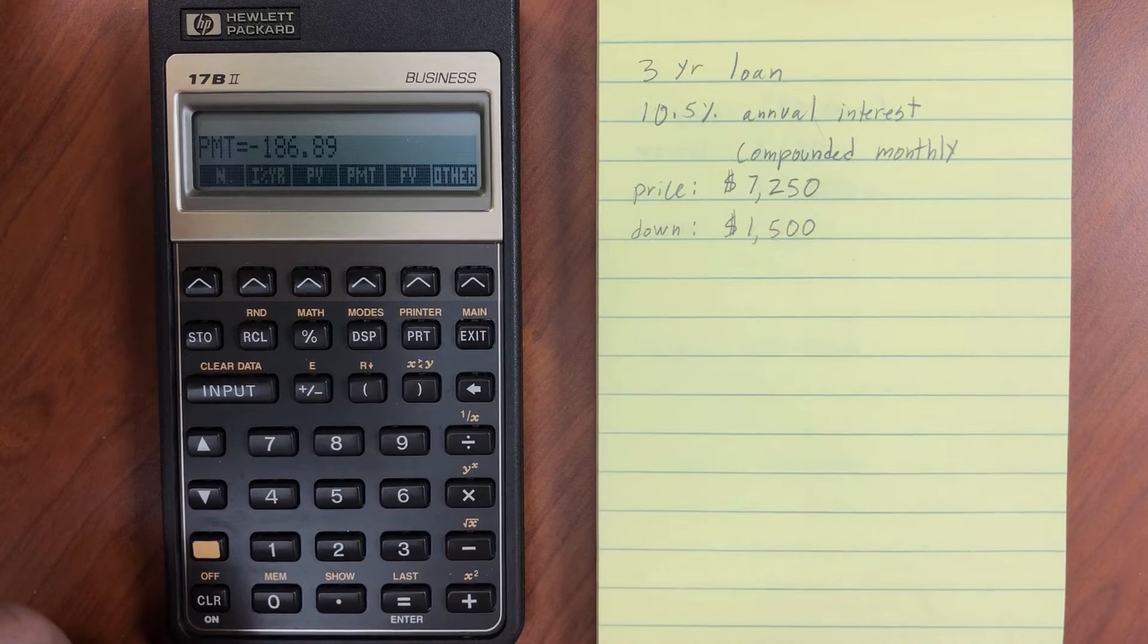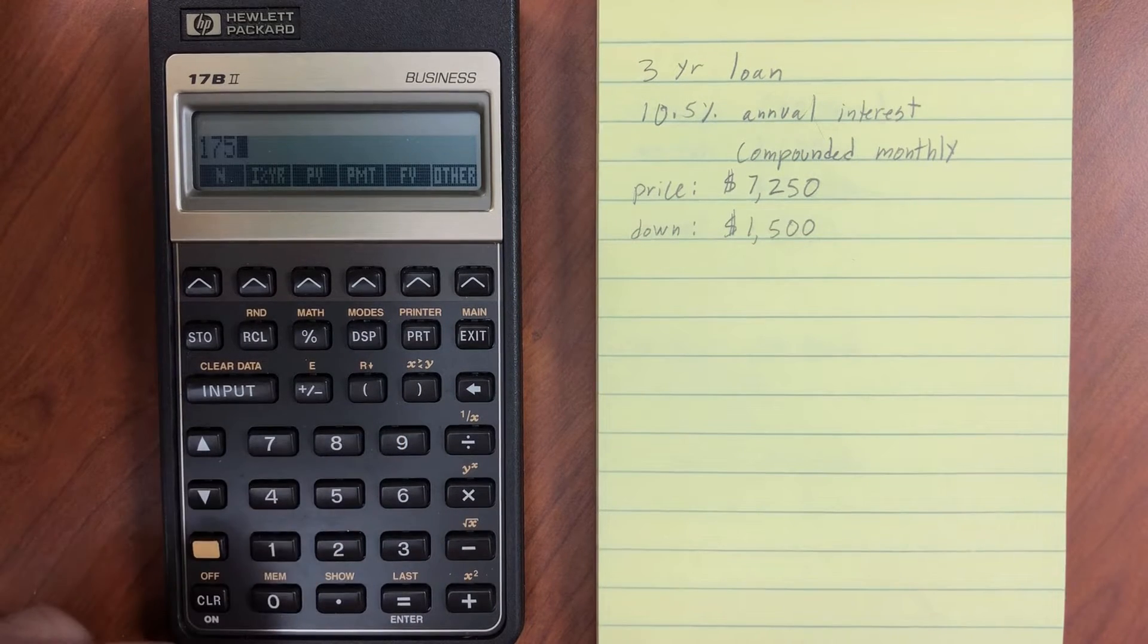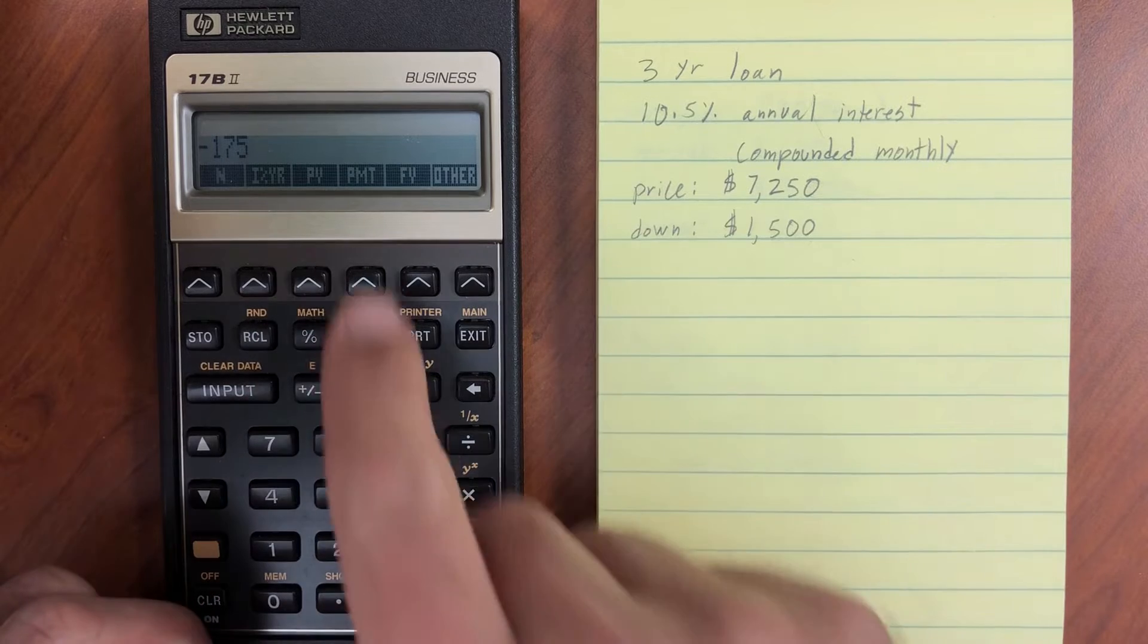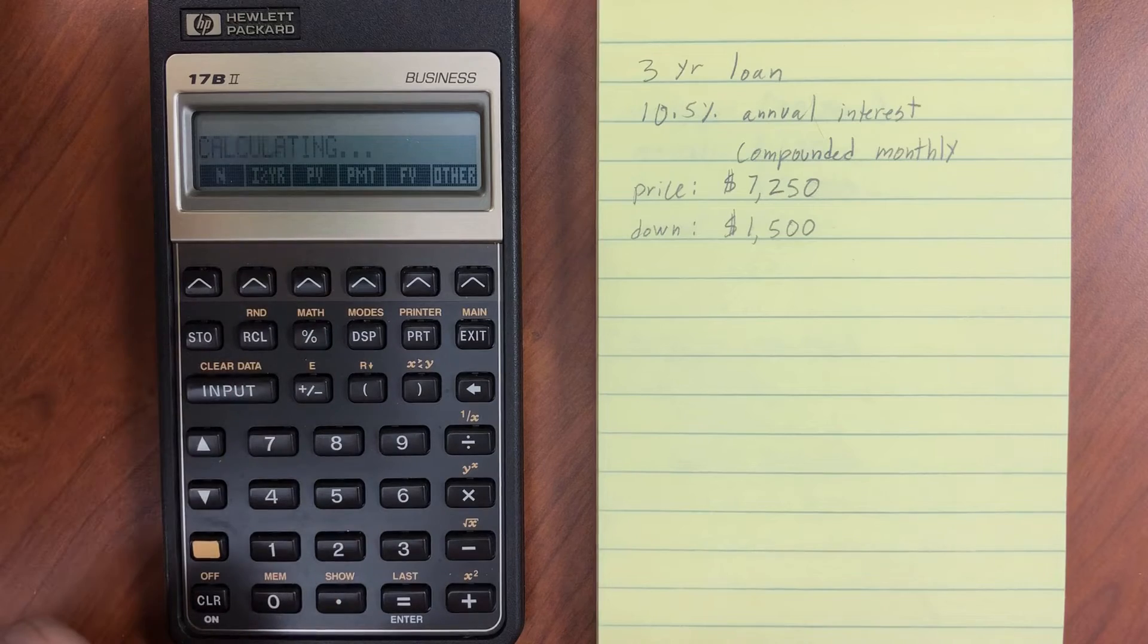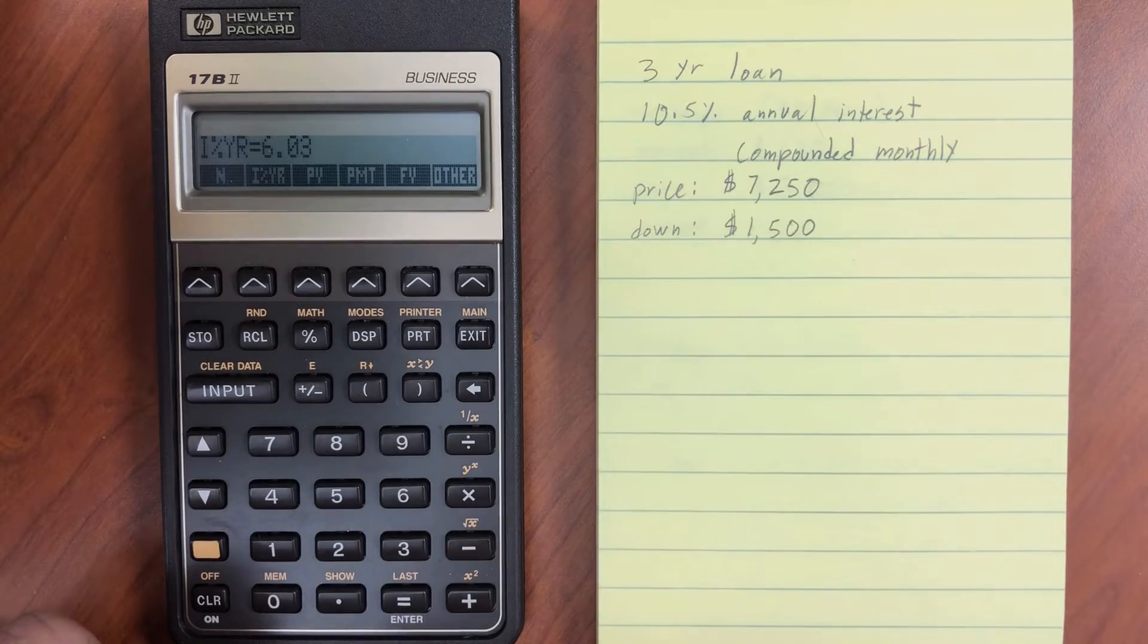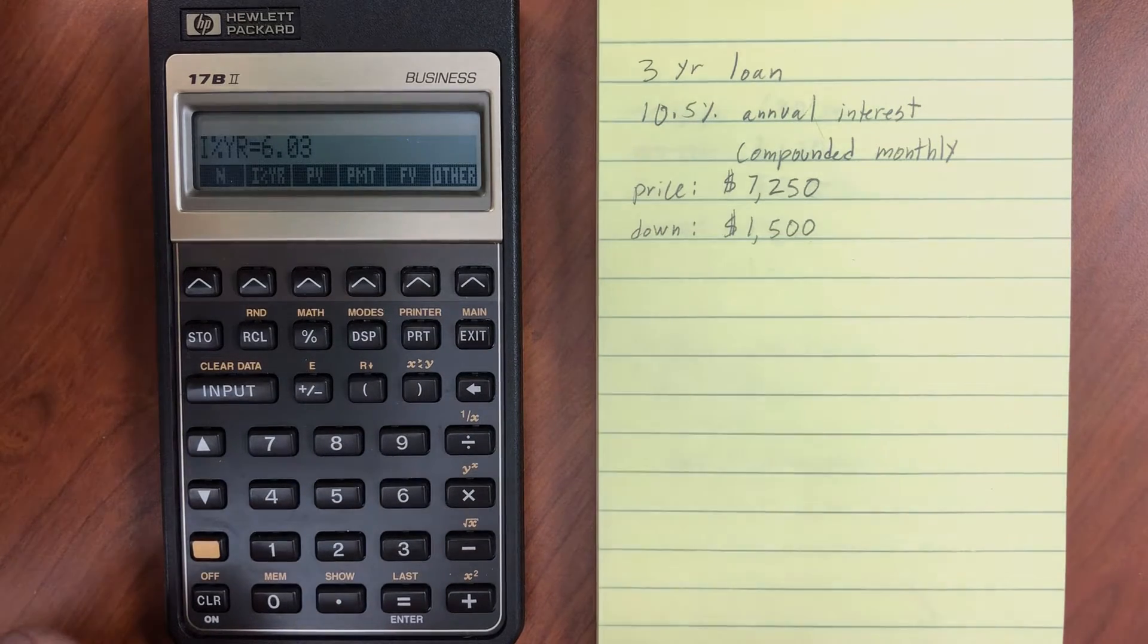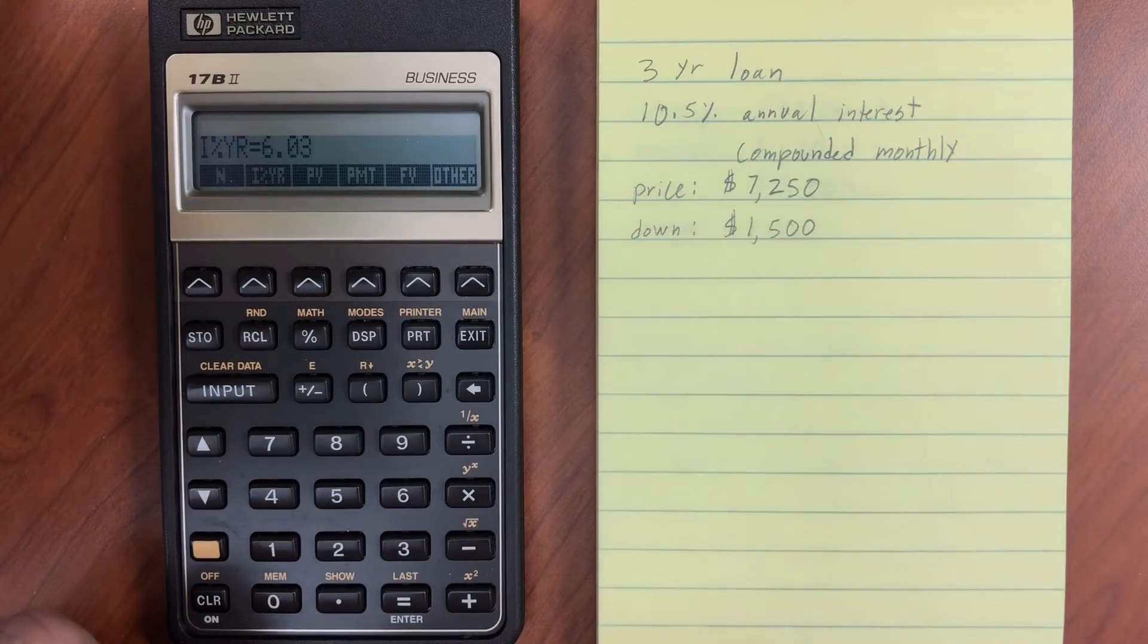Remember, our payment is that, but we can only afford that $175 per month. What interest rate would I need in order to make that happen? So the interest rate is 6.03%. So maybe I'll shop around and see if I can get 6% interest rate to buy this thing.